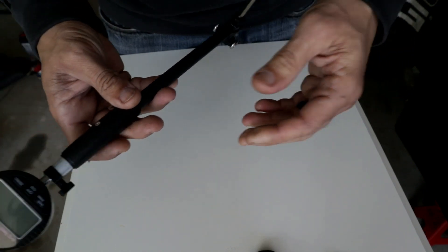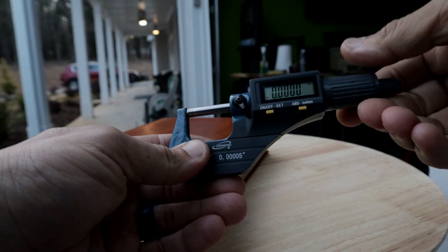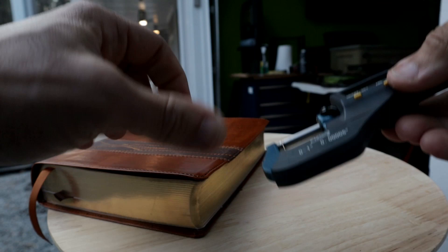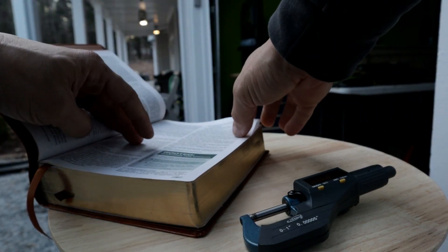That's it, our bore gauge is pretty much put together. They claim the accuracy of this dial bore gauge to be five tenths of a thousandth of an inch.